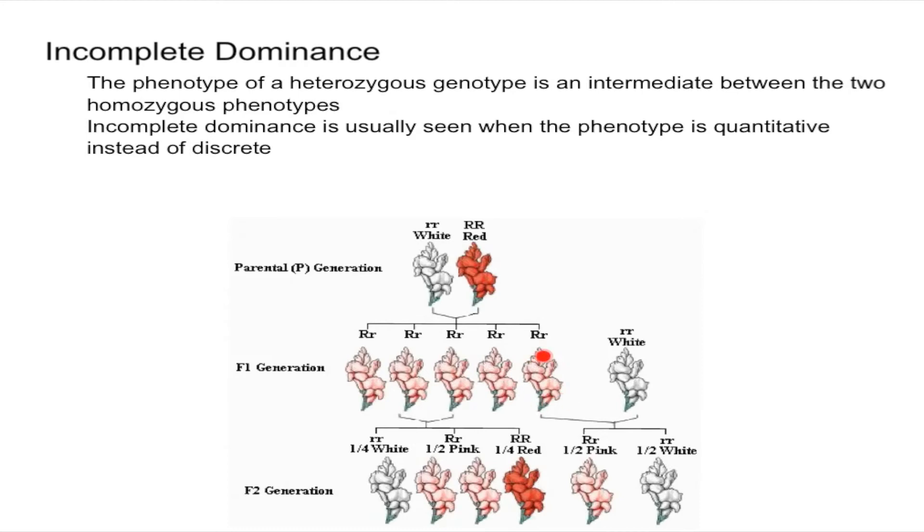Now if you mate a heterozygous snapdragon and a white snapdragon or homozygous recessive snapdragon, you're going to get half pink and half white.